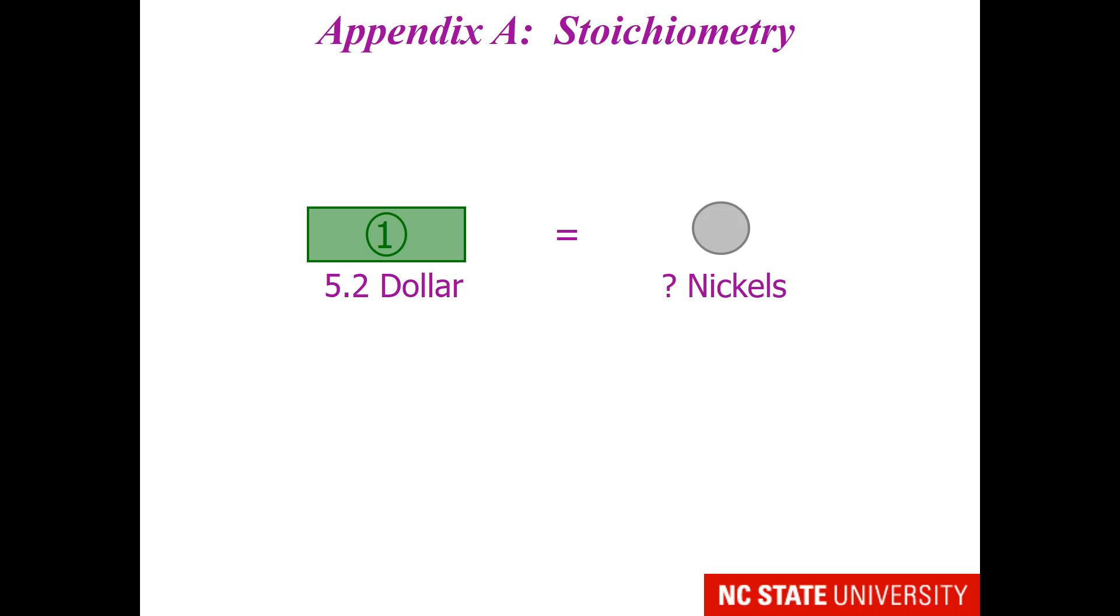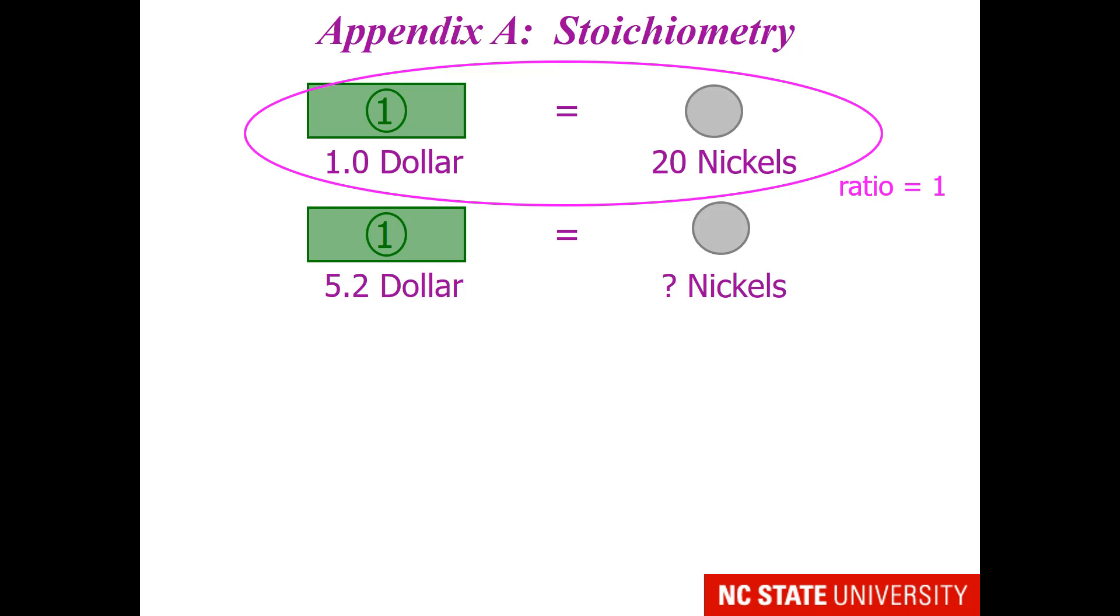So, mentally, what ratio are you using? You're using this ratio, that 1 dollar is equal to 20 nickels. Again, this is a ratio 1 to 1. Now, you could certainly go through the math I just described, but there's a faster way to do it. You could take your 5.2 dollars, multiply it by the ratio of 20 nickels divided by 1 dollar, and come up with 104 nickels.